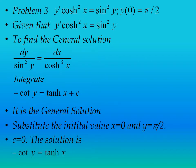The third problem is y'·cosh²x = sin²y, with initial value y(0) = π/2. We have to find the general solution. Separating the variables: dy/sin²y = dx/cosh²x. Integrating — a standard integral — gives -cot y = tanh x + c. This is the general solution.